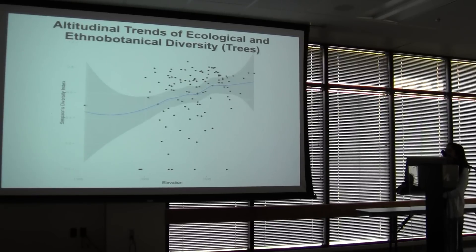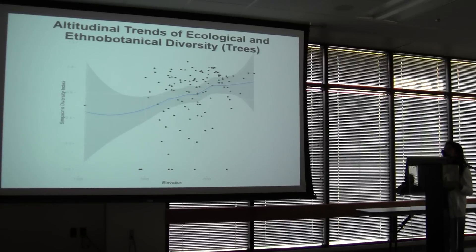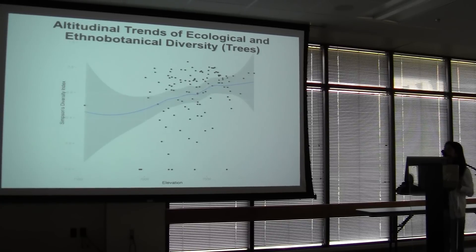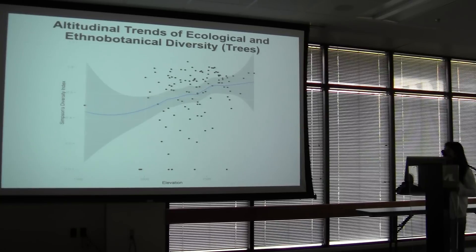This is very preliminary, but it shows that the diversity of species that are mostly used — the number of uses and number of useful plants — seems to increase with elevation, and that elevation seems to be between 2,200 to 2,800 meters.